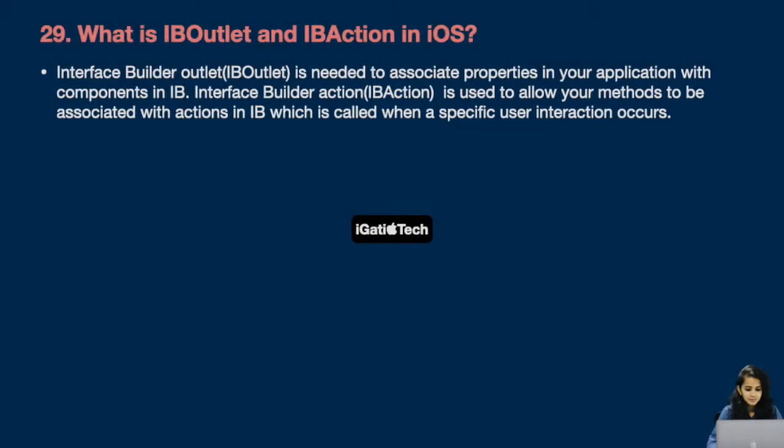Next question: What is IBOutlet and IBAction in iOS? IBOutlet is needed to associate properties in your application with components in Interface Builder. IBAction is used to allow your methods to be associated with actions in Interface Builder, which is called when a specific user interaction occurs.